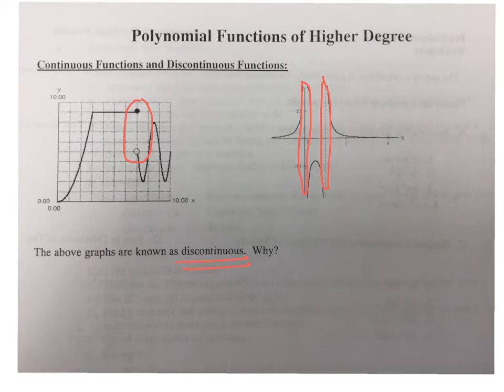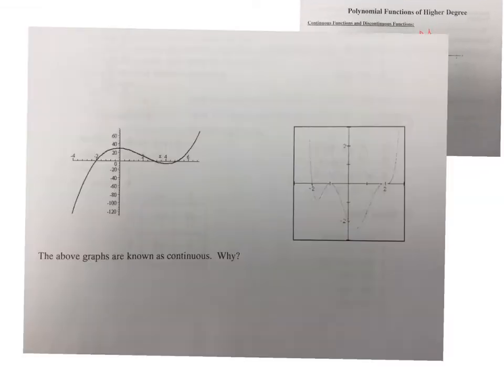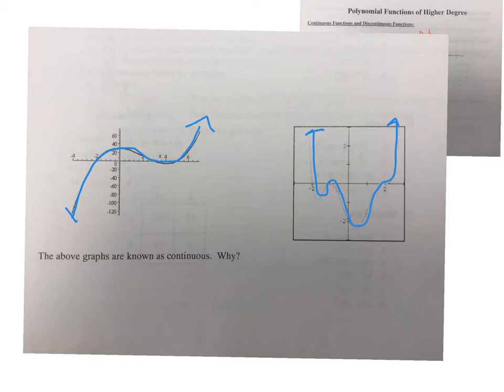Now if we look at the next set of graphs, these two graphs are smooth and they're continuous because they keep going on and on forever without jumping values. There's no interruption in the domain values or in the x values, so they are continuous.